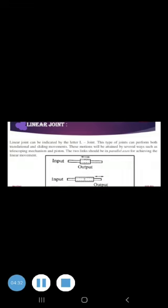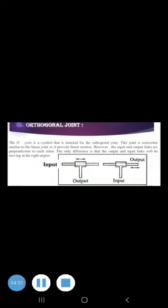The second joint is orthogonal joint. This is also called Type O joint. This is also a translational sliding motion, but the input and output links are perpendicular to each other during the move.